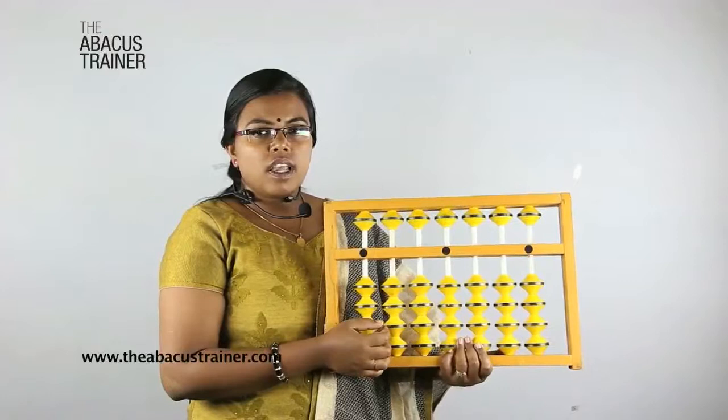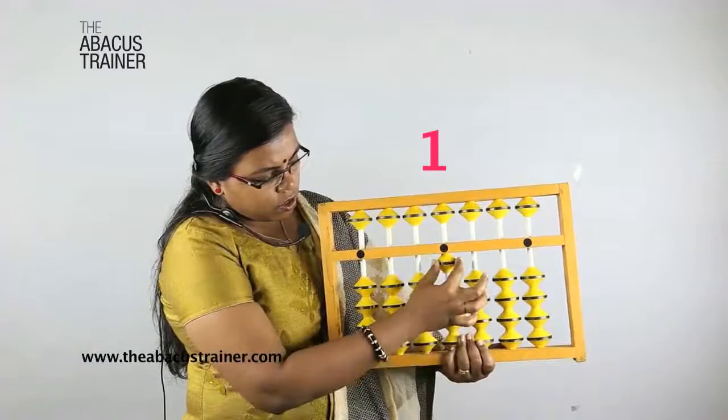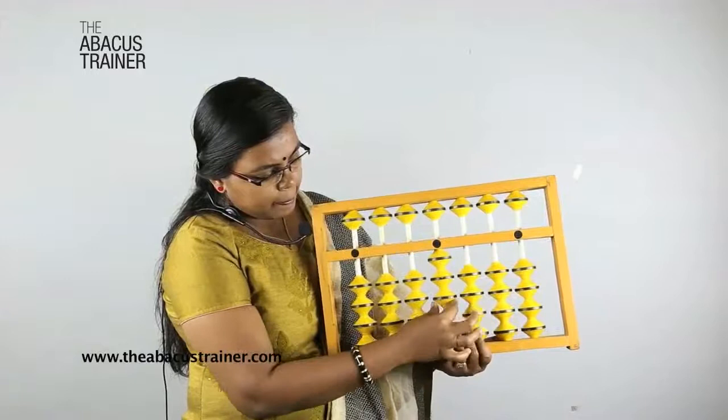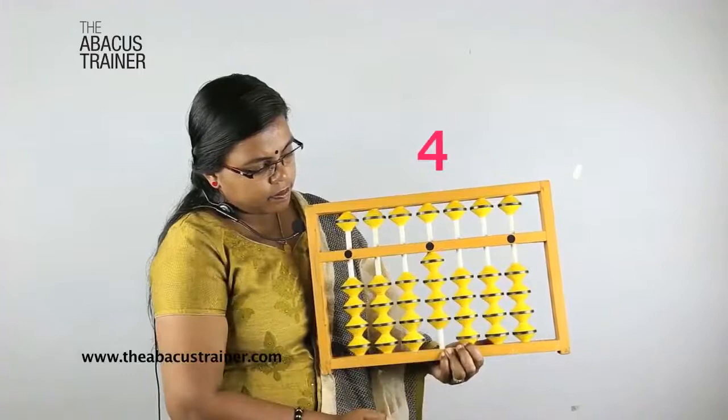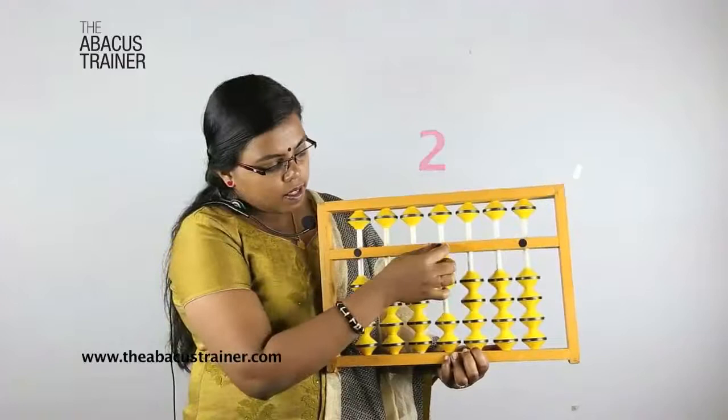Now, it's zero on an abacus. Let's move 1, 2, 3, 4. One, two, three, four. Once again, 1, 2, 3, 4.